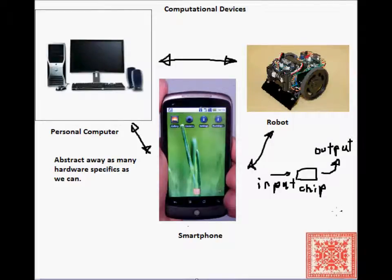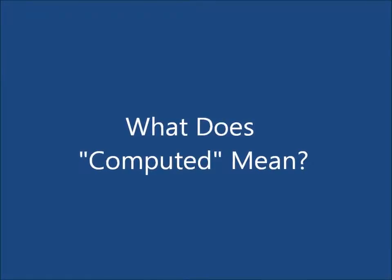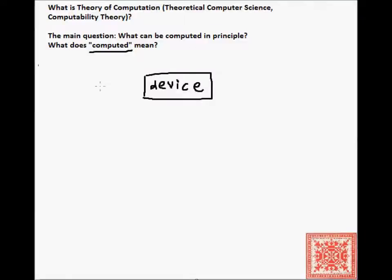That's why they are all basically the same. Were we to introduce a quantum computer where bits can be in multiple places at the same time, then we would have to change our computational model, obviously. So let's get back to this question: what does computed mean? First of all, we have to have a computational device with as much hardware detail abstracted away as possible.